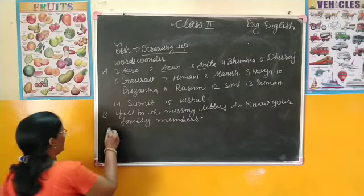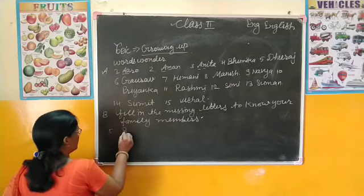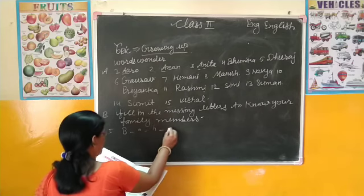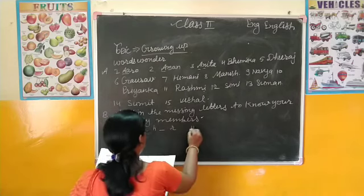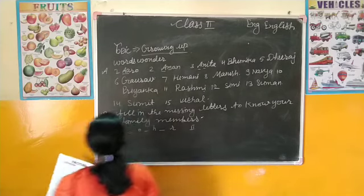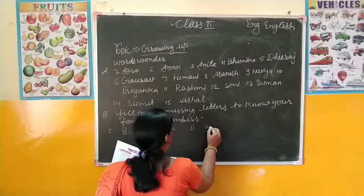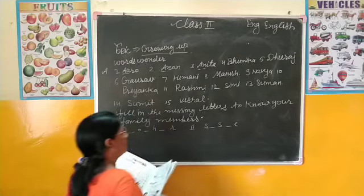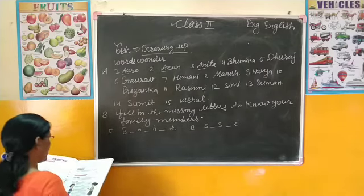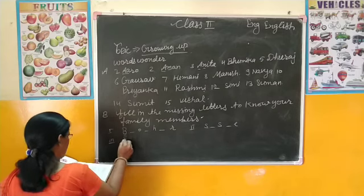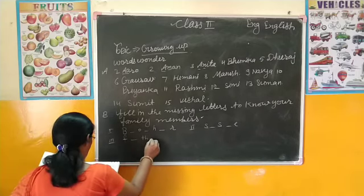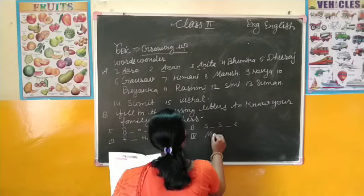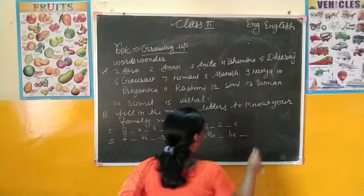इसमें हमें क्या करना है। First: Brother - B के बाद filling the blanks, फिर O, फिर filling the blanks, फिर T, फिर filling the blanks, फिर R। Second spelling है Sister - S, I, S, फिर T, E, R - यहां बीच-बीच में missing letters हैं। Third number पे Father की spelling - F, फिर T, H, और फिर R। Fourth number पे Mother - M, O, फिर filling the blanks, H, E।